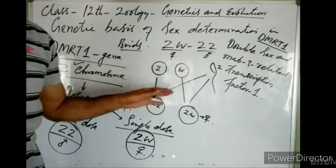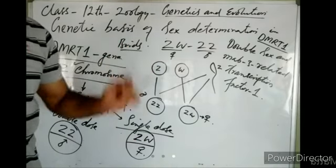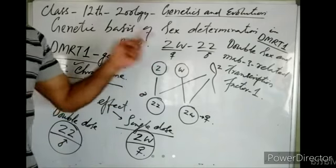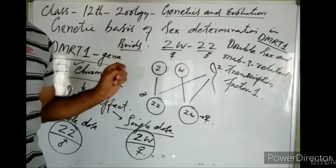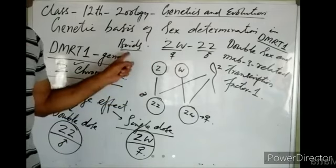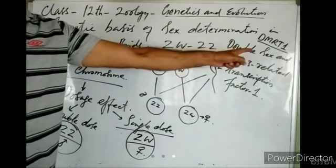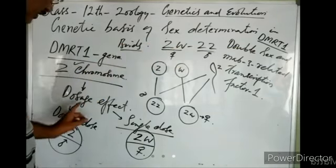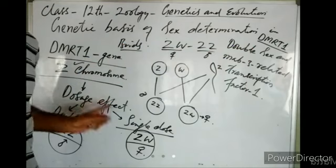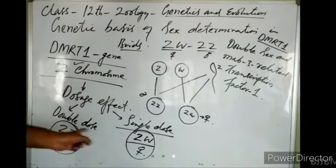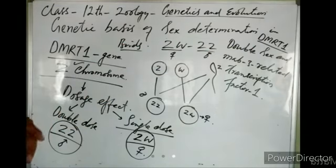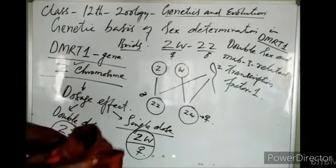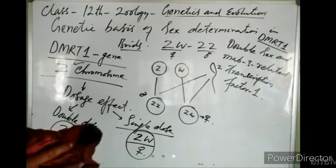In summary: in humans, it was the SRY gene on the Y chromosome responsible for sex determination. In birds, it is the DMRT1 gene on the Z chromosome, which shows dosage effect. Now we will discuss sex determination in honeybees.